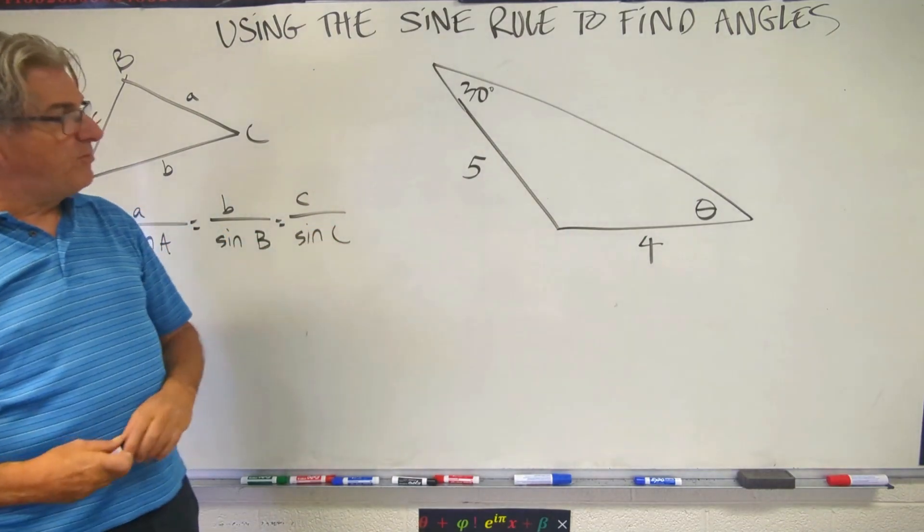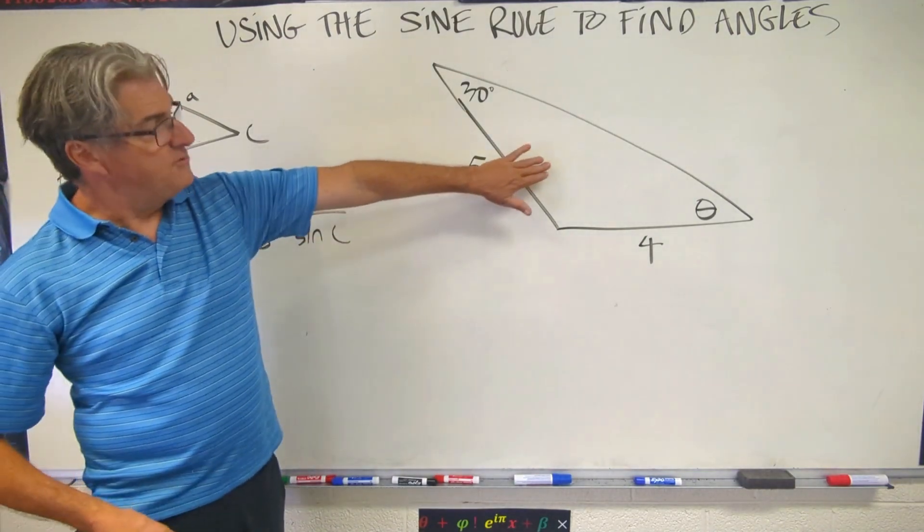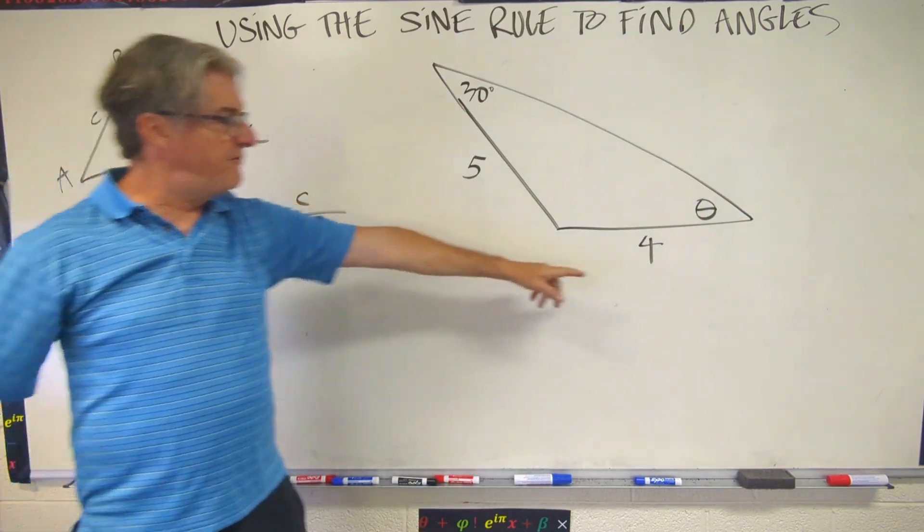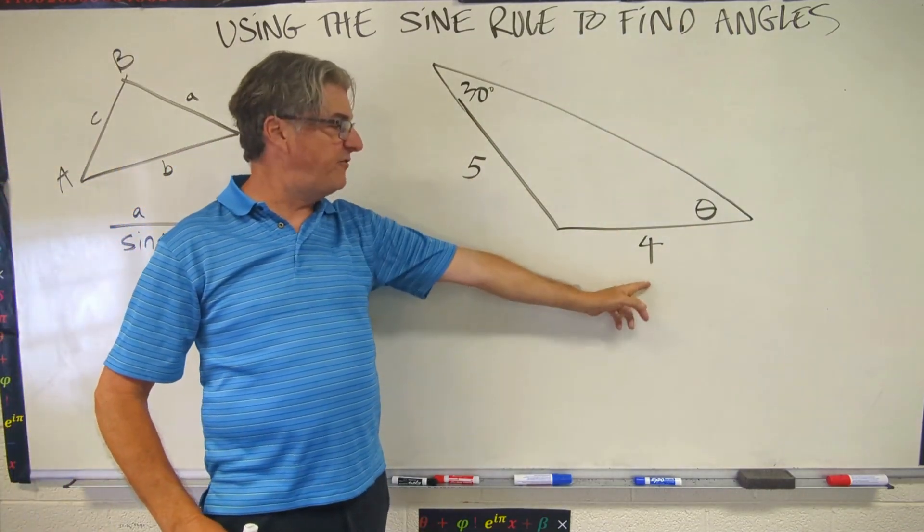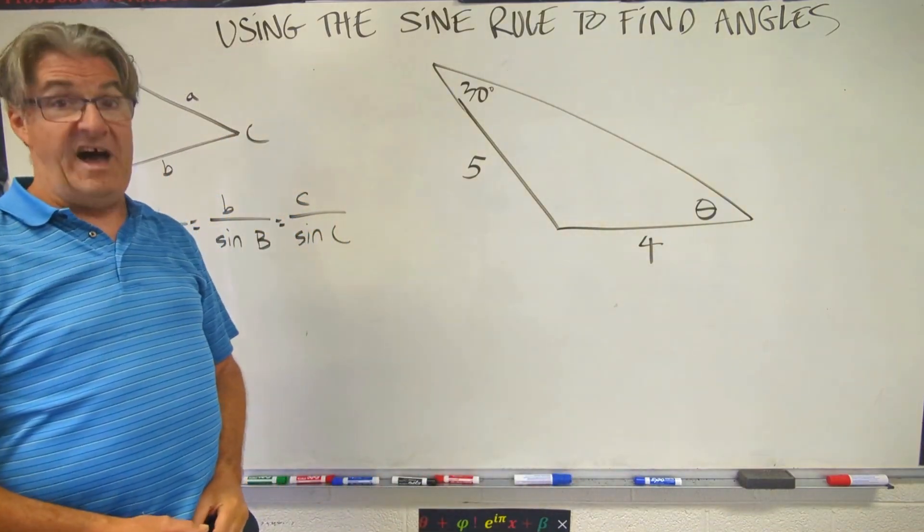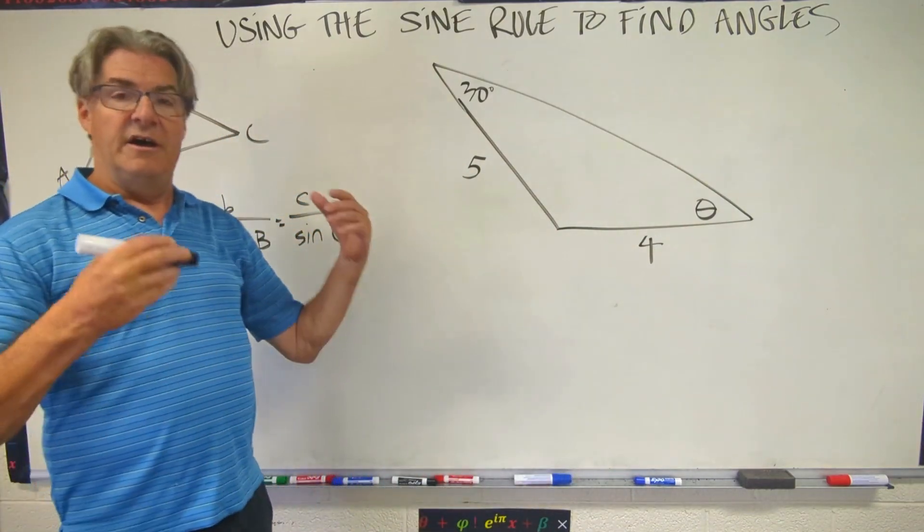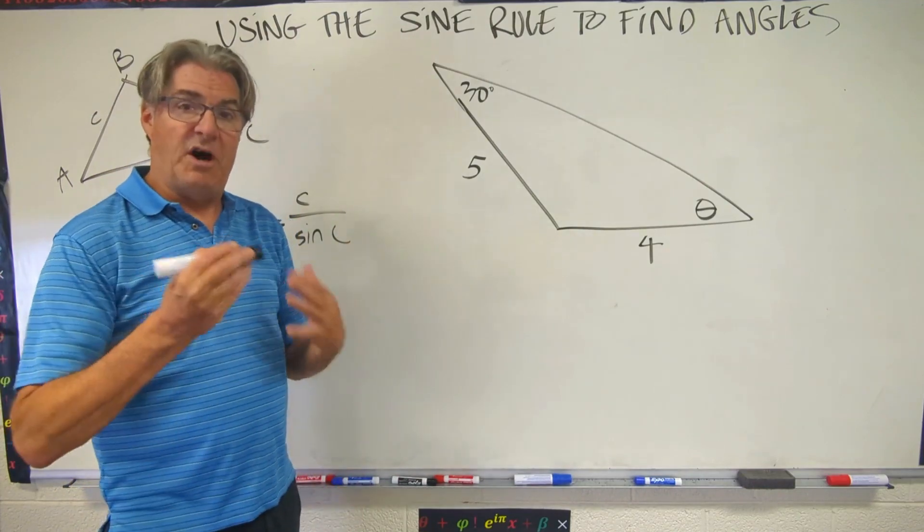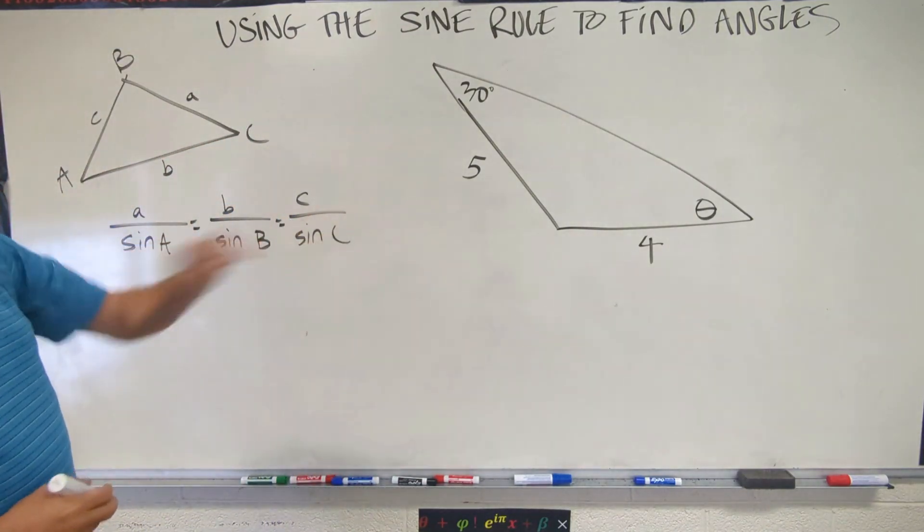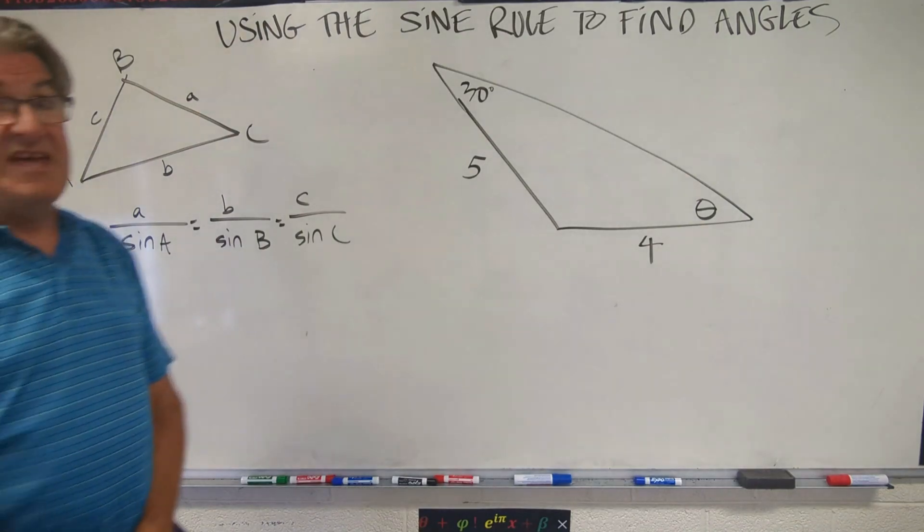Okay. So here's the example problem. We have a nice obtuse triangle with a 30 degree angle up here and a 4 and a 5. So this side is 5, that's 4, and we have a theta. So the instruction for this one might be find theta. So if you feel bold, go ahead and pause the video. Use your sine rule and see if you can write an equation that would help you solve for theta.